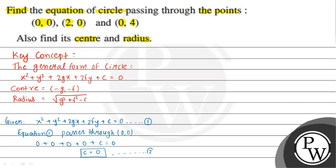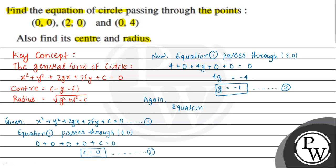Again, equation 1 passes through the second point (2,0). Putting x = 2 and y = 0 in equation 1, we get 2² + 0² + 2g(2) + 0 + 0 = 0. So 4 + 4g = 0, therefore g = -1. This is equation 3.